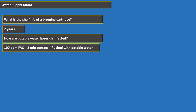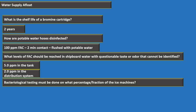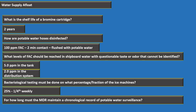For shipboard water with questionable taste or odor that cannot be identified, reach five parts per million in the tank and maintain two parts per million throughout the distribution system. Twenty-five percent of ice machines must be tested for bacteria weekly. The medical department representative must maintain a chronological record of potable water surveillance for two years.